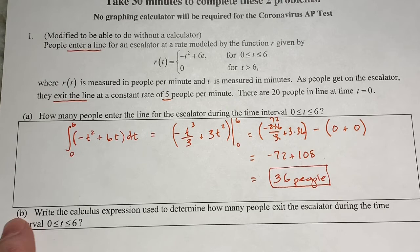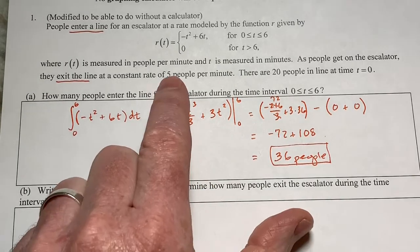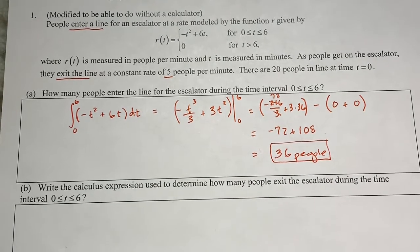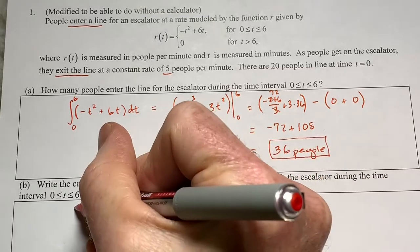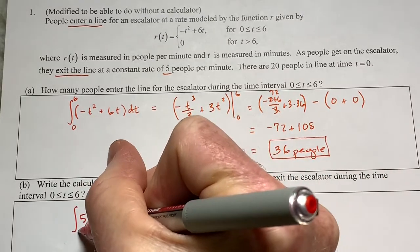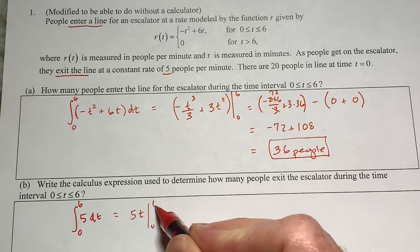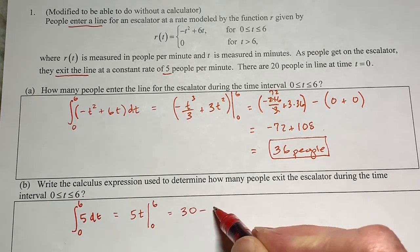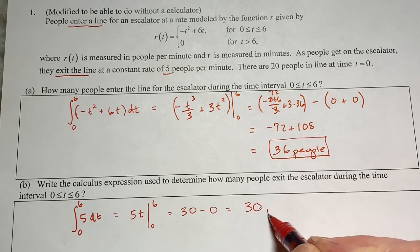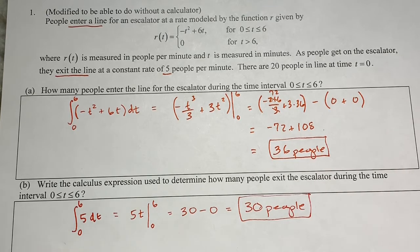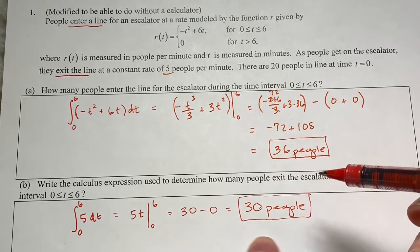The second part says: write the calculus expression used to determine how many people exit the escalator. A lot of people just multiply five times six and get 30, but the calculus expression is to integrate the rate. When I integrate five from zero to six, I get 5t evaluated from zero to six, which is 30 minus zero — 30 people. That backs up the arithmetic with calculus.